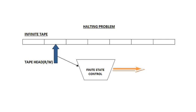This is almost the ending part of this lecture series. We will be coming across a few remaining topics: one is the halting problem, then we will look into certain problems known as decidable, non-decidable, solvable, and non-solvable. Finally, we will end with a topic known as the Post Correspondence Problem, which is very important from a student's perspective, especially for university examinations.